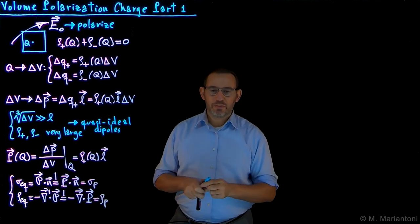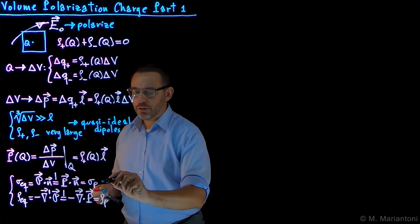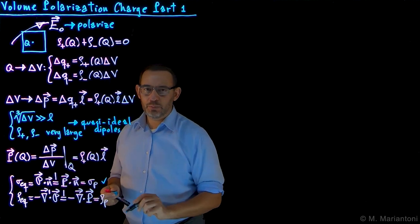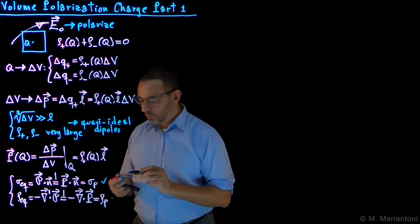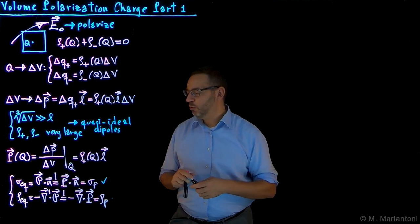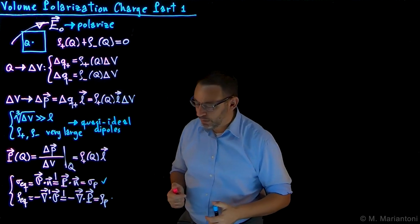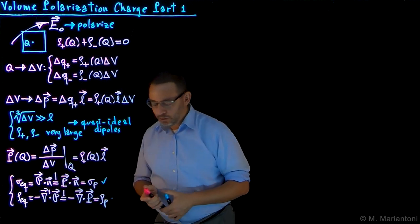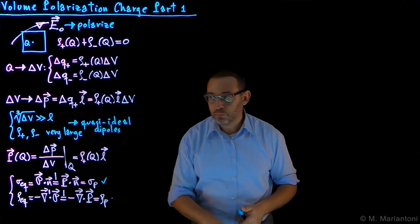Sigma_P we already gave some physics intuition for in the previous example. What about rho_P? We want to understand that there is such a thing as rho_P — and in order to understand that, it's much more complicated.